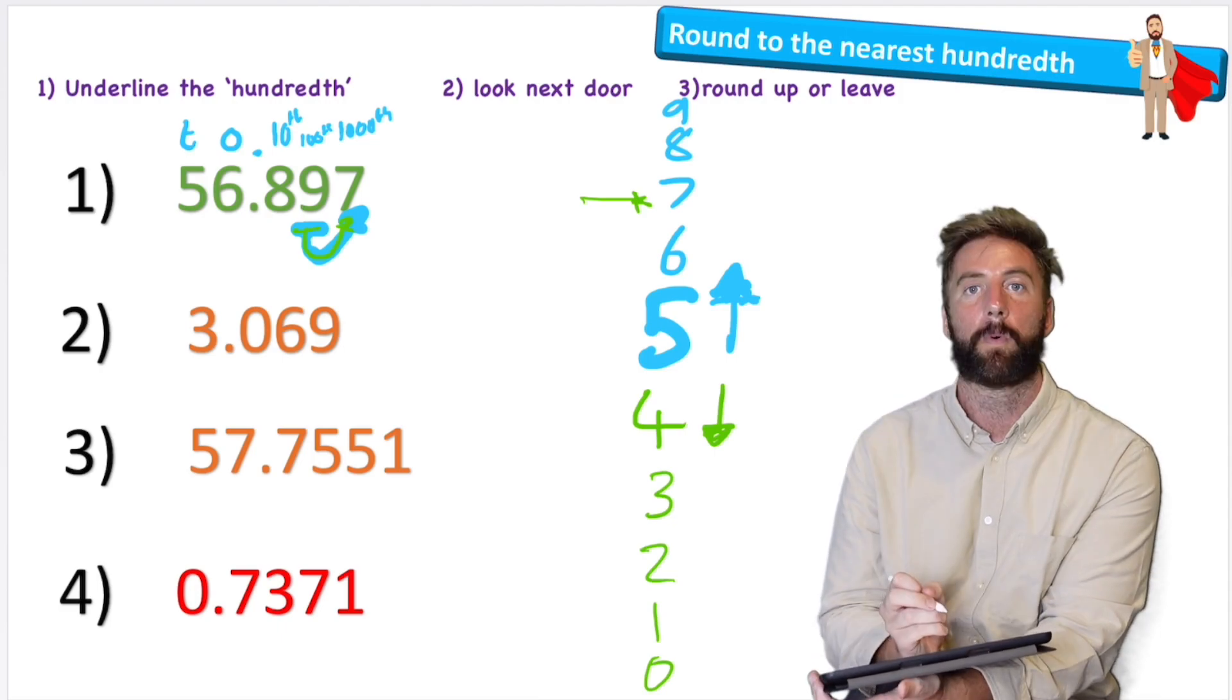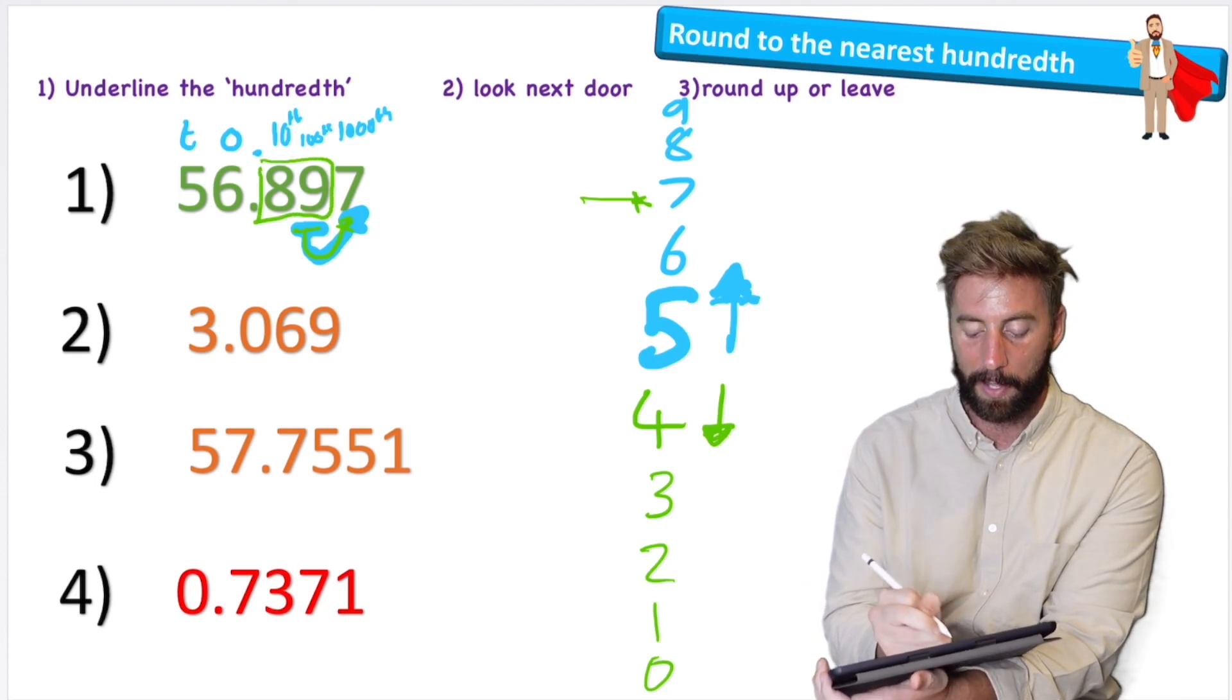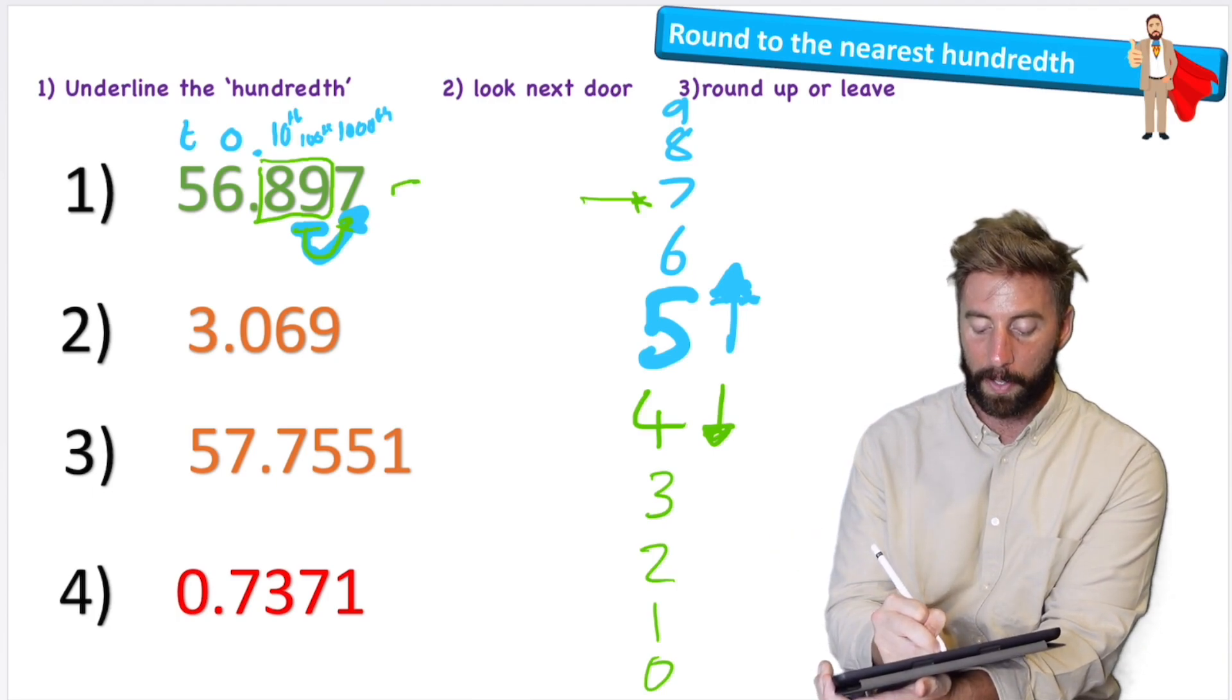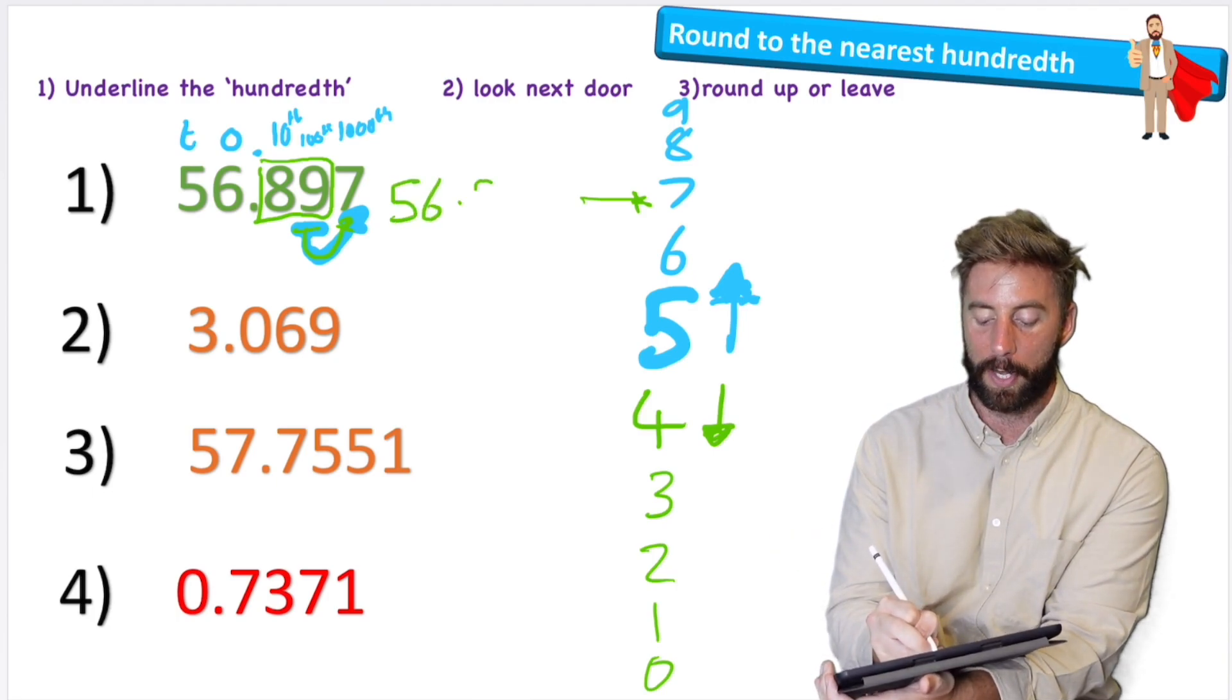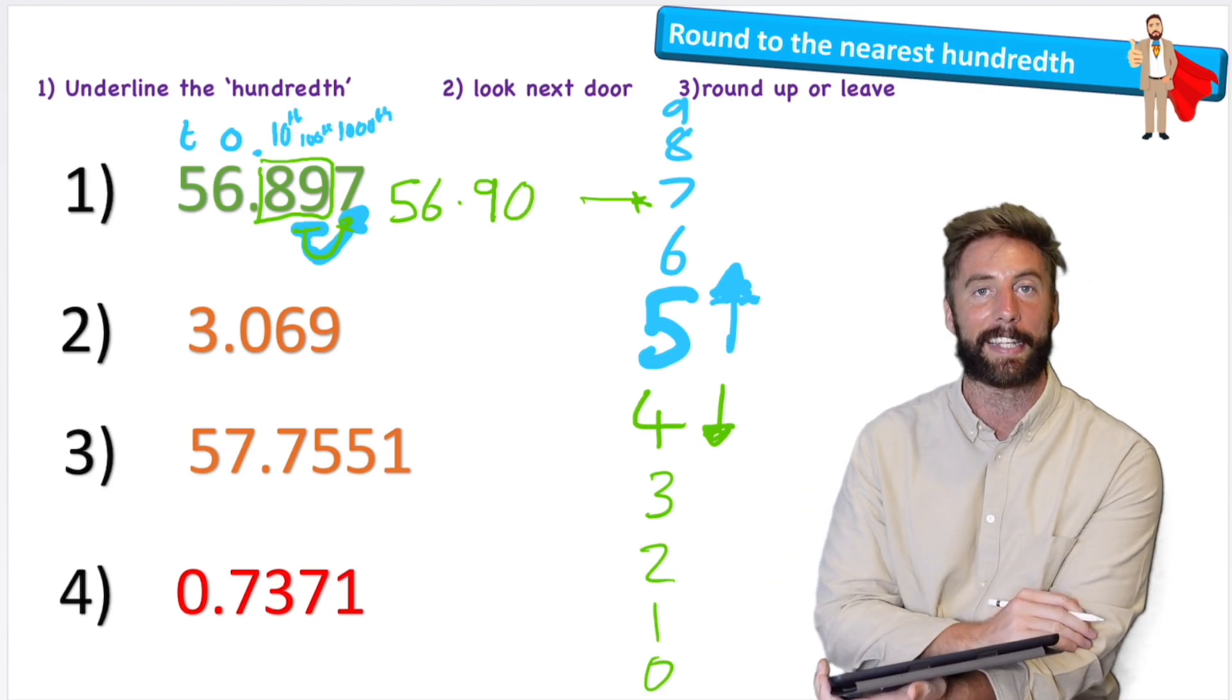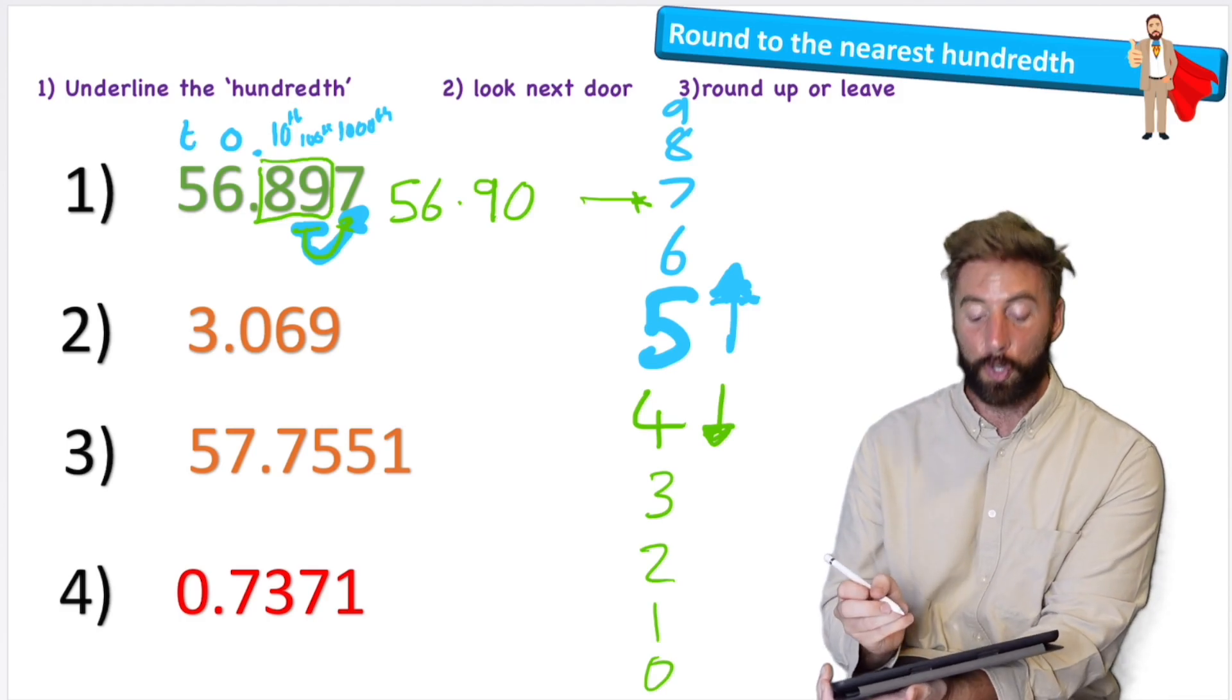Well, I'm actually rounding to the nearest hundredths, which is this whole area here. And we have at the moment 89, so I can round it up to 56.90 or 90 hundredths. I had 89 and I've rounded it up to 90 hundredths.